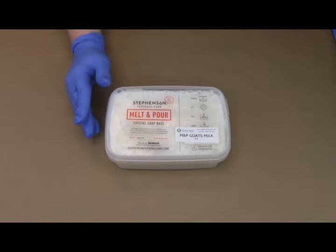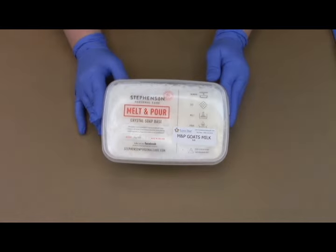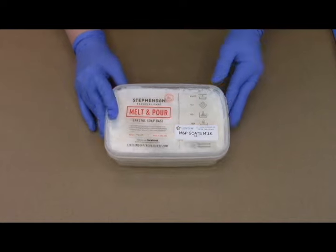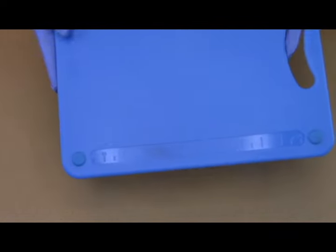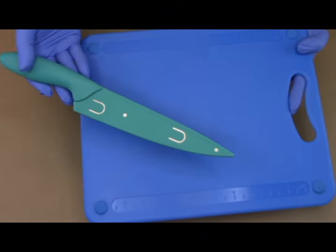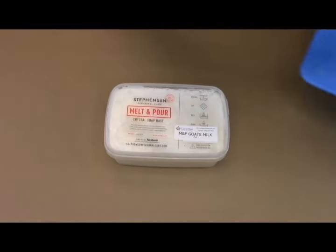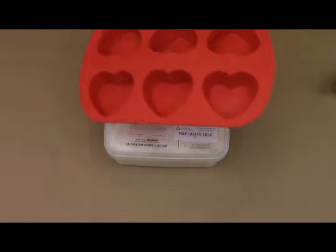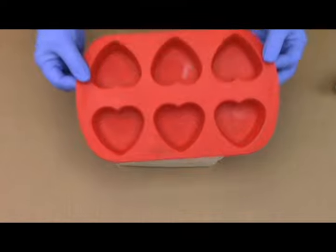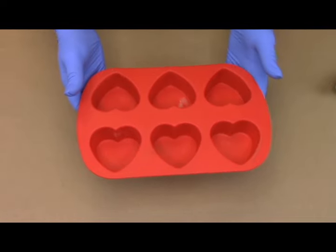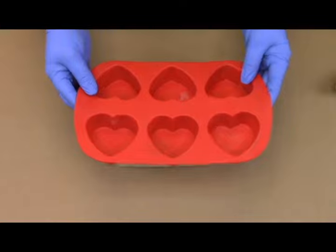Let me give you the list of things you're going to need here. Obviously you're going to need your melt and pour soap base, but you're also going to want to get a cutting board and a knife or a soap cutter. You'll also need to get a silicone mold, which here I'm using our six count heart mold, which is the perfect size I think, especially for a bar of soap.